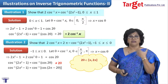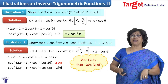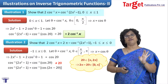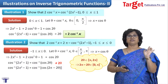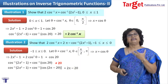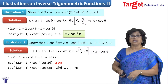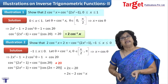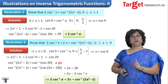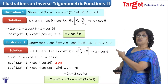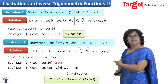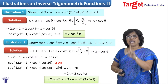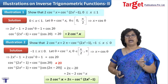Now I check where 2π - 2θ lies. Since θ ∈ [π/2, π], 2π - 2θ lies in [0, π], which is the range of cos⁻¹. Hence I can write the answer as 2π - 2θ. Replacing θ with cos⁻¹x, this leads to 2cos⁻¹x = 2π - cos⁻¹(2x²-1). Remember, this is possible only when x lies between -1 and 0.